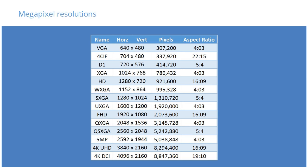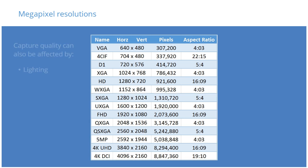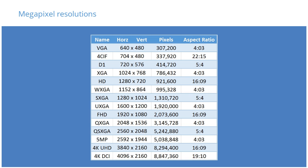Images with more than 1 million pixels are considered to be megapixel resolutions. This greater resolution can capture more details, but that does not always result in a higher quality image. Lighting and lens quality can affect the capture, and bandwidth and compression can also reduce the quality. The best resolution is one that meets your needs and no more — there is no reason to process, transmit, and store pixels you never use.